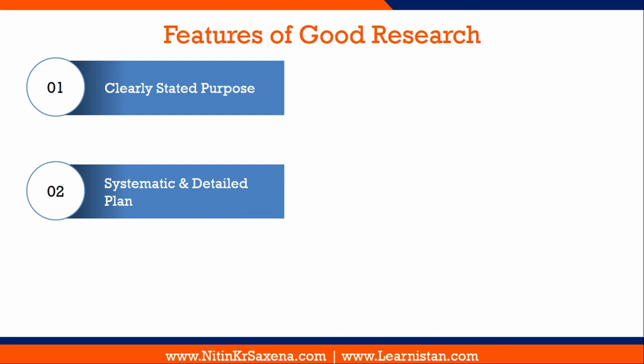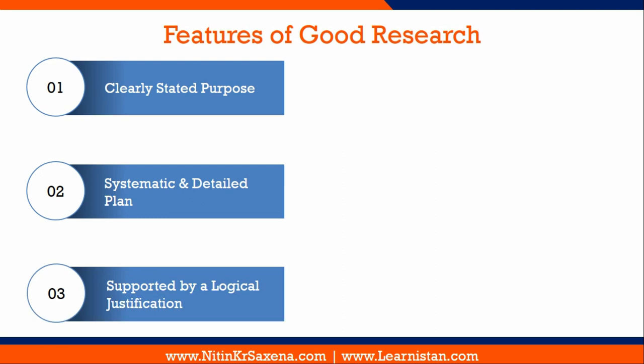The second feature is a systematic and detailed plan. The research should be structured with specified steps to be taken in a specified sequence, in a well-defined set of rules. This does not mean it rules out creative thinking, but it certainly rejects the use of guessing and intuition in arriving at conclusions. The third feature is that good research must be supported by logical justifications. The selection of techniques for collecting information, sampling plans, and data analysis techniques must be supported by logical justification, which gives a robust foundation to your research. The logical property of research makes it more meaningful in the context of taking decisions.